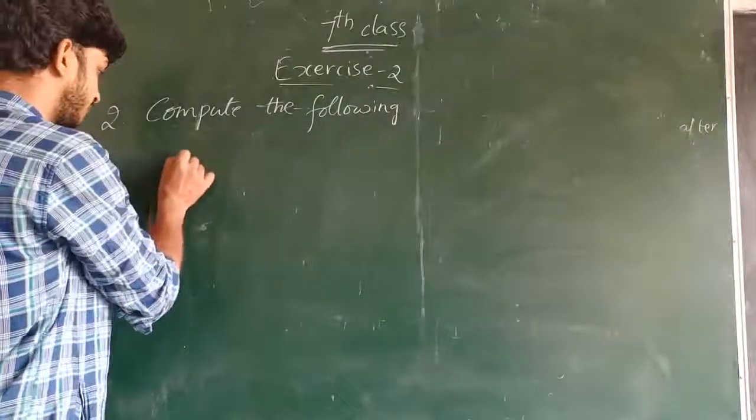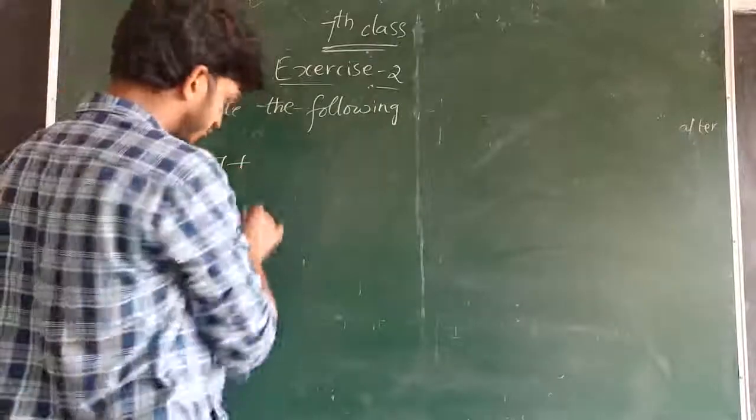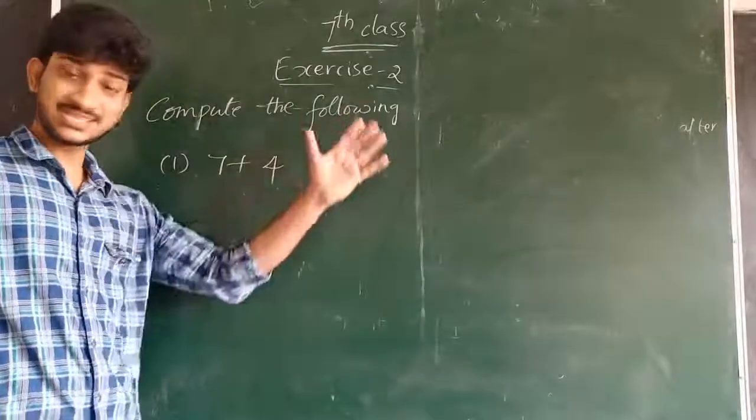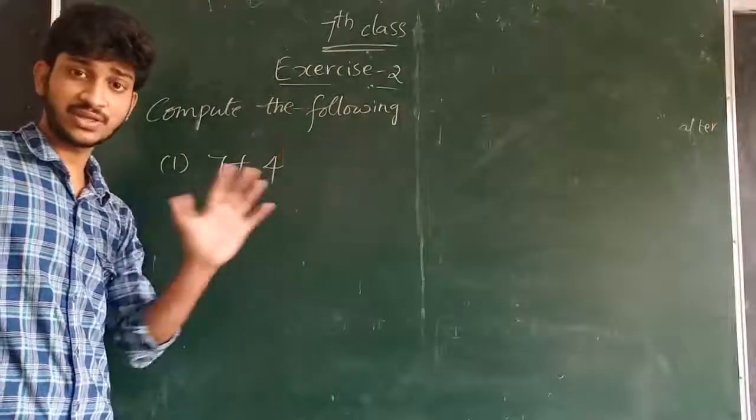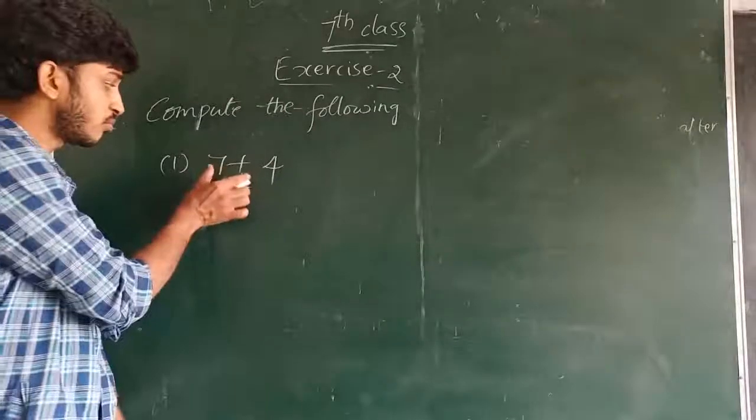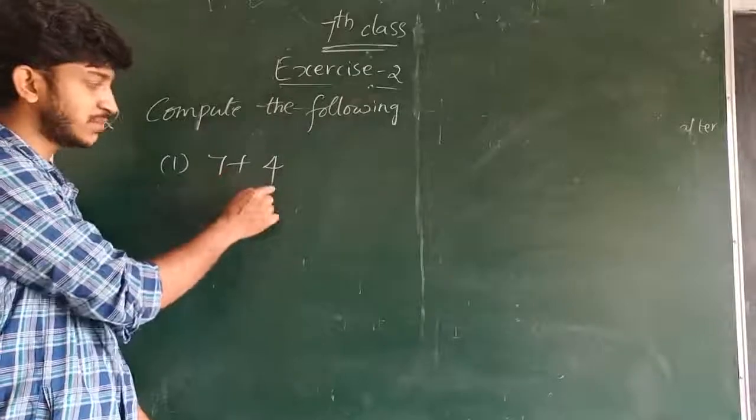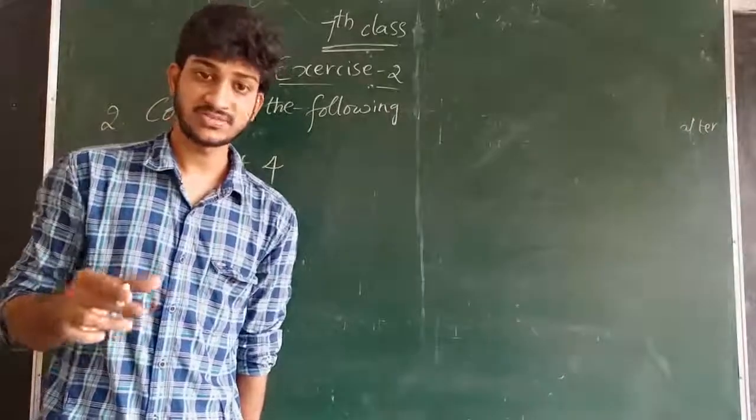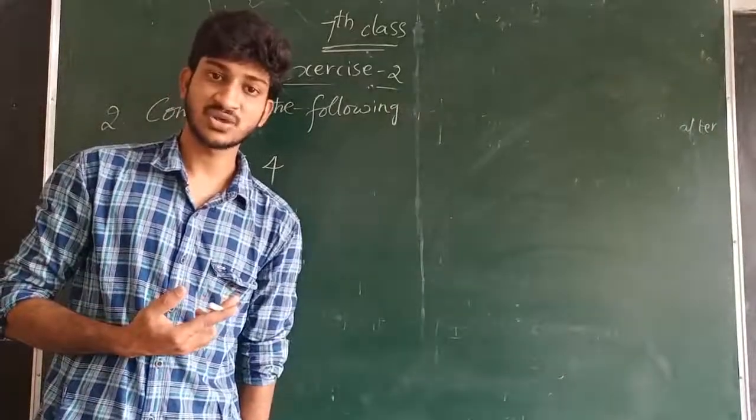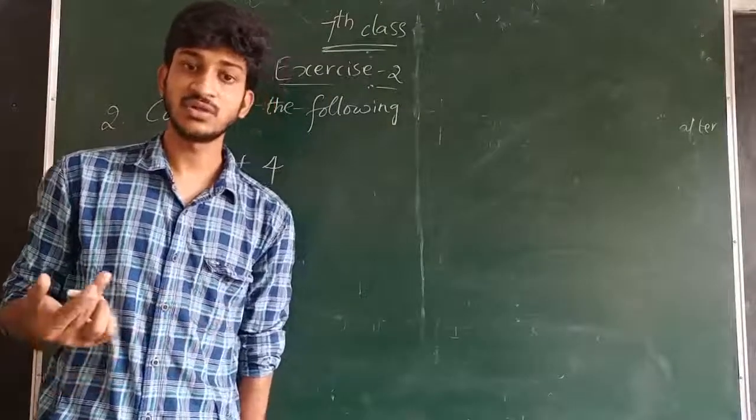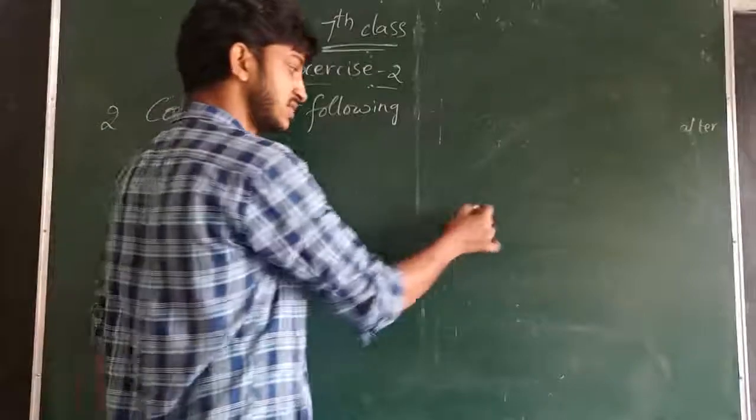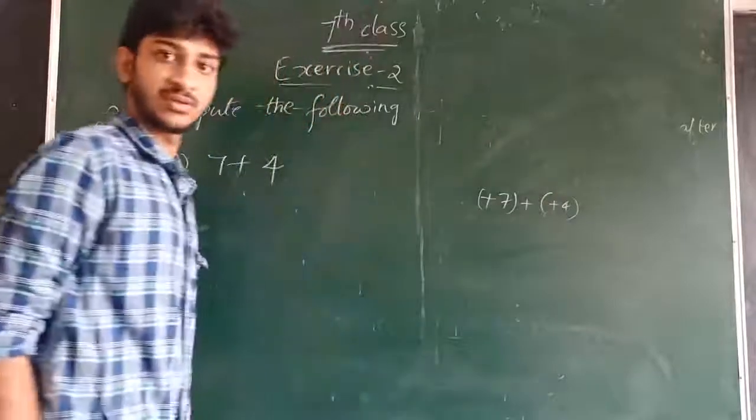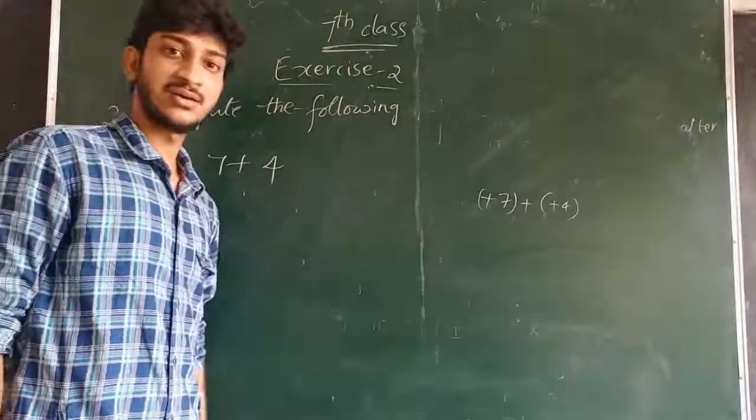The first problem is 7 plus 4. This exercise is about additions. Here both numbers are positive numbers. Seven is a positive number and four is also a positive number. Listen carefully, positive numbers are not denoted with the plus value because we know seven is positive, four is positive, one is positive. That's why they didn't mention these numbers with the plus, like seven plus plus four.